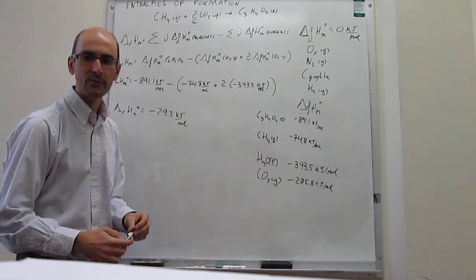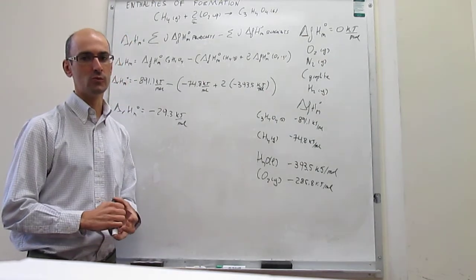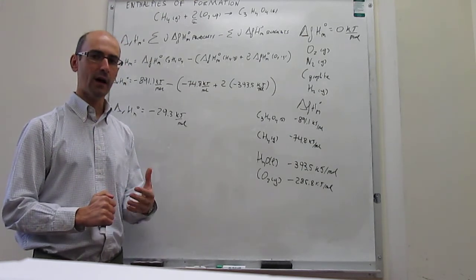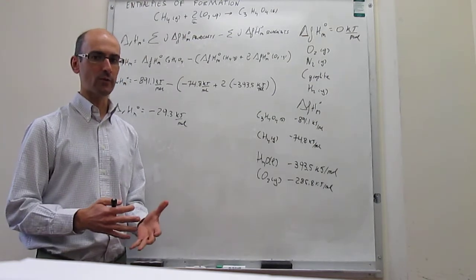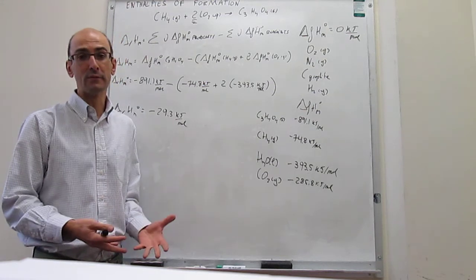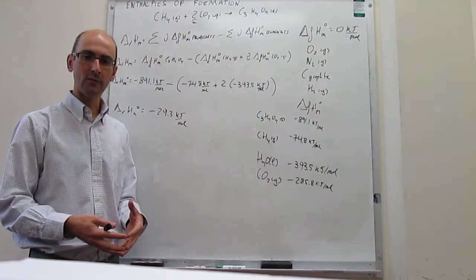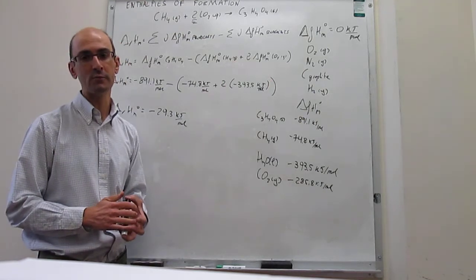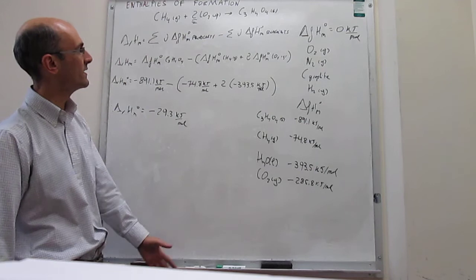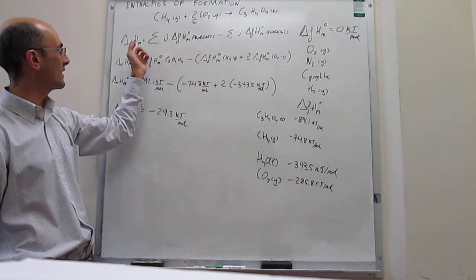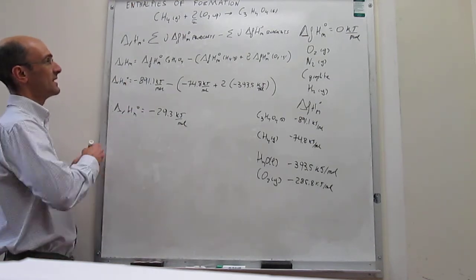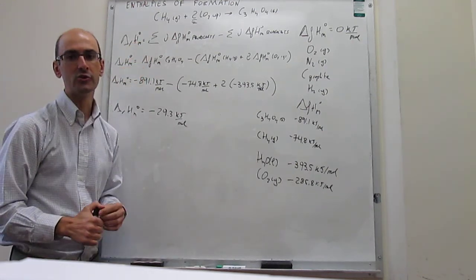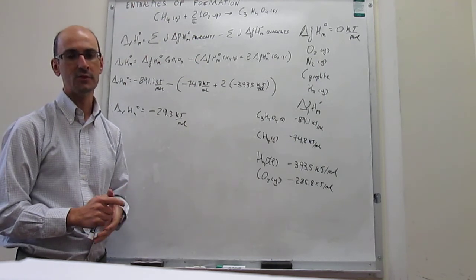To summarize: in this video we have seen how to use the method of enthalpy of formation to calculate the reaction enthalpy. A difficulty with enthalpies of formation is recognizing that those are just relative measures of the enthalpy of a given substance. To determine those relative enthalpies, you must define an arbitrary zero, which is the most stable allotropes of elements at the standard state. Using those standard enthalpies of formation, you can calculate a reaction enthalpy. Standard here means you are using pure substances at a pressure of one bar.